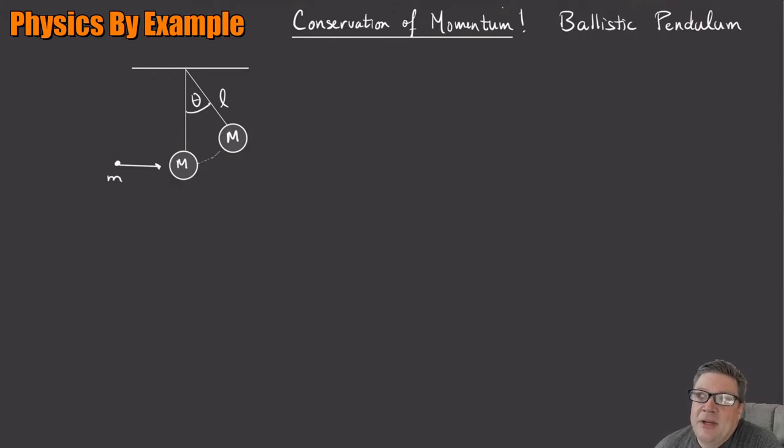So the idea is that by measuring that angle, which might be pretty easy to do, we can actually calculate what the speed of that initial object was. That's kind of cool. That's why it's called a ballistic pendulum because just by measuring the angle of the pendulum we can calculate some ballistic quantity, in this case the initial speed.